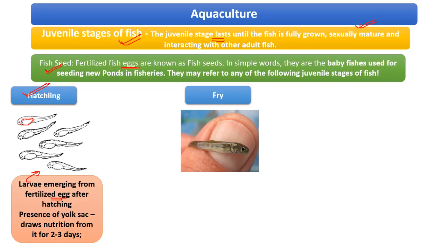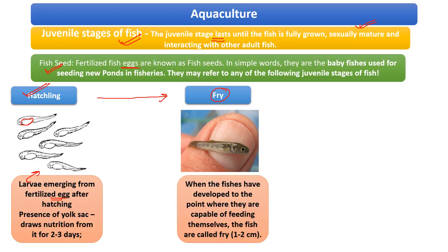Moving on, the next stage is called fry. This stage develops when the yolk sac that was visible in the hatchling stage disappears. If the yolk sac is disappearing, that means the fish is developing the capability of feeding itself. If they were initially getting their nutrients from the yolk sac and it has now disappeared, the fish must be capable of feeding on its own — otherwise it would die. So that stage is known as the fry stage, and the fish is nearly 1 to 2 centimeters in size.